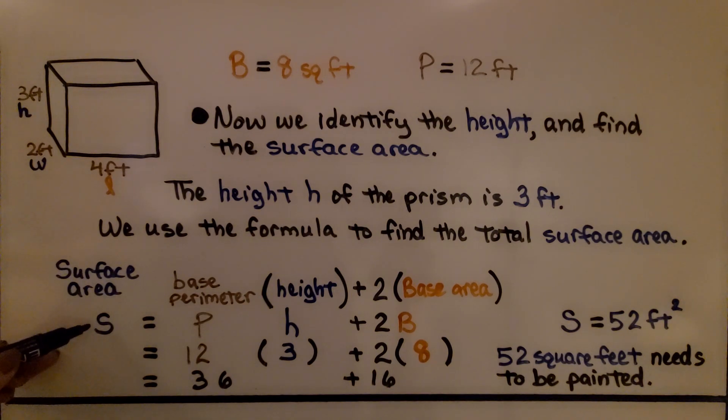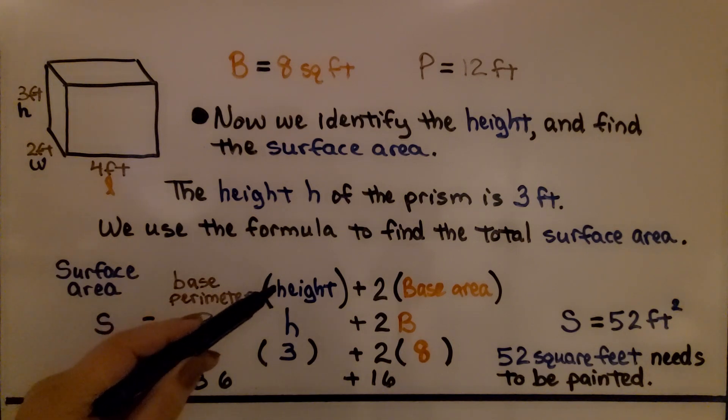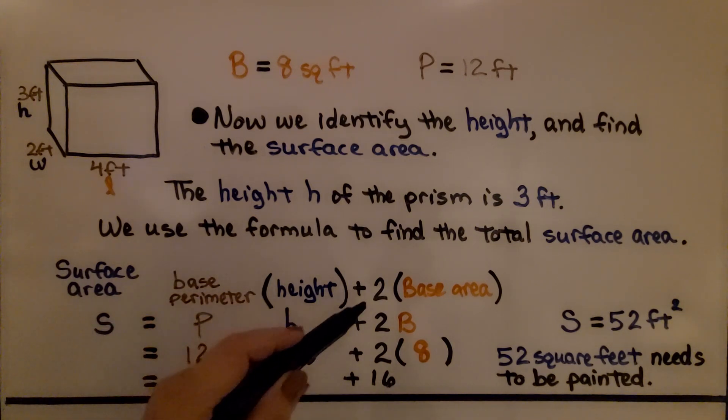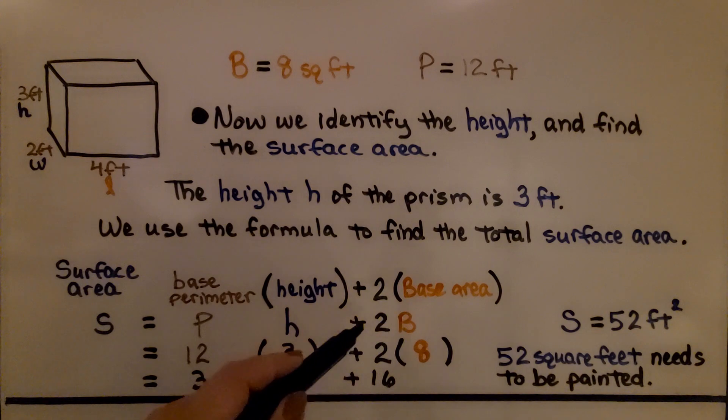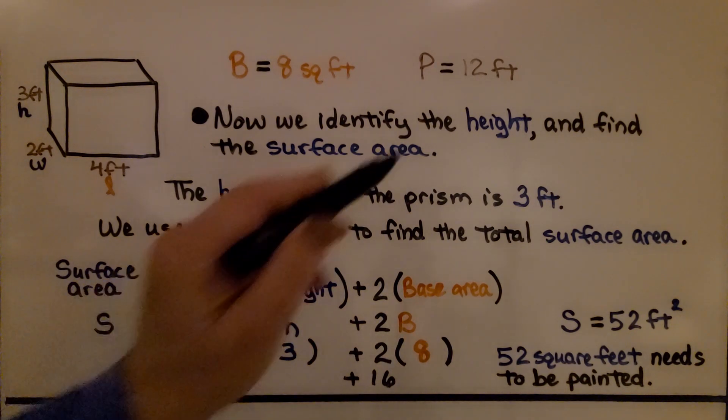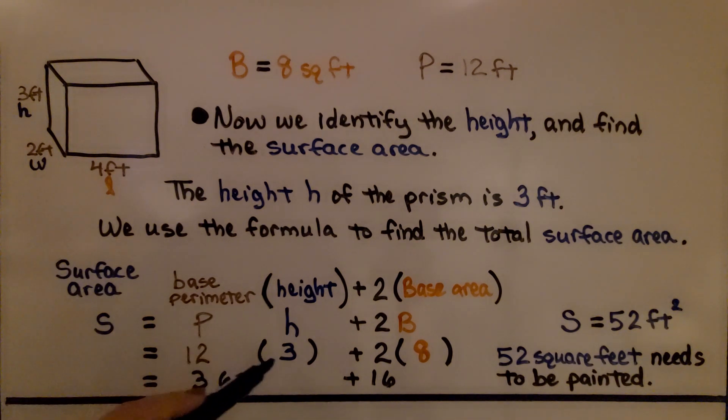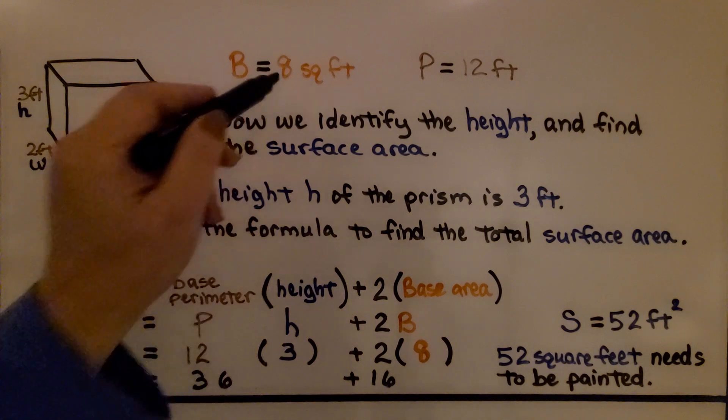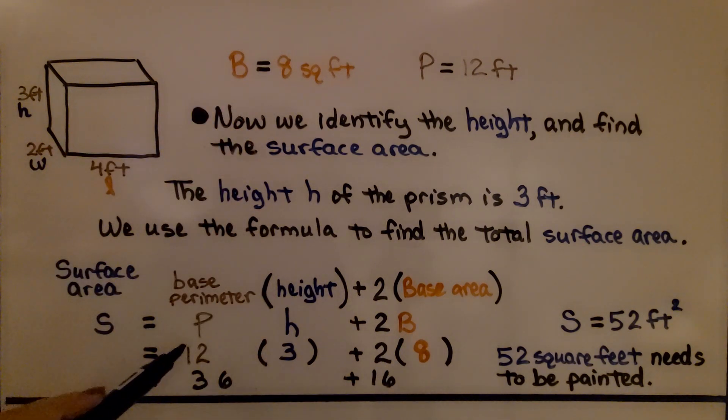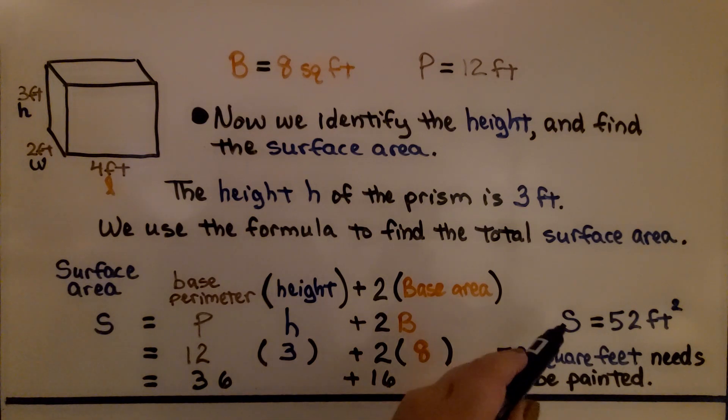Surface area S equals the base perimeter P multiplied by the height h plus 2 times the base area B. Our base perimeter is 12, the height is 3, and 2 times the base area would be 2 times 8. We get 12 times 3 is 36, plus 2 times 8 is 16. And 36 plus 16 equals 52.